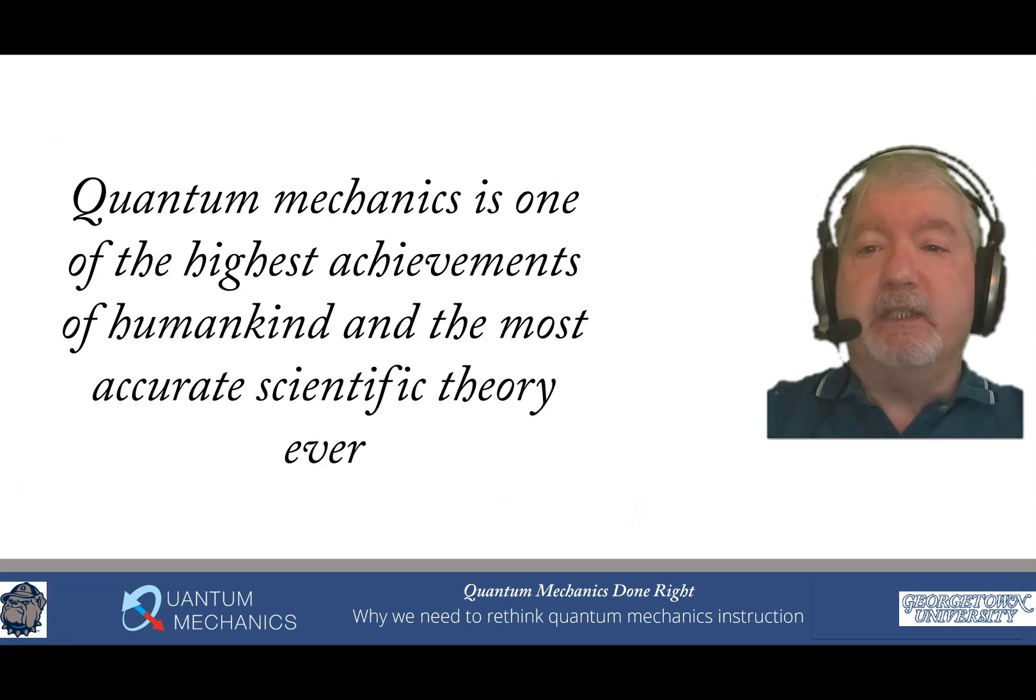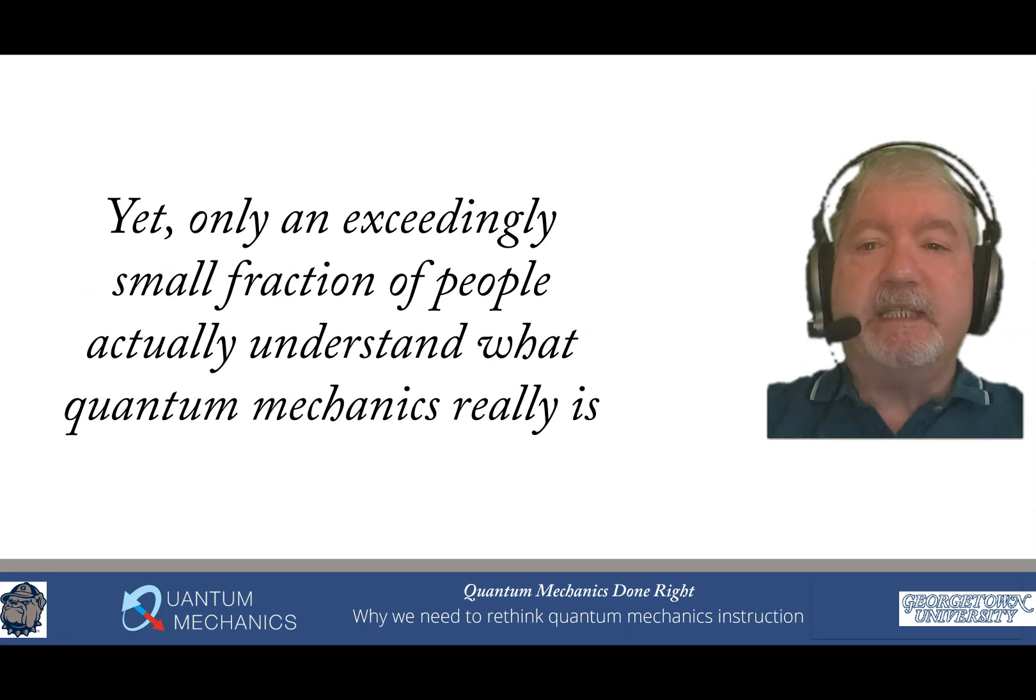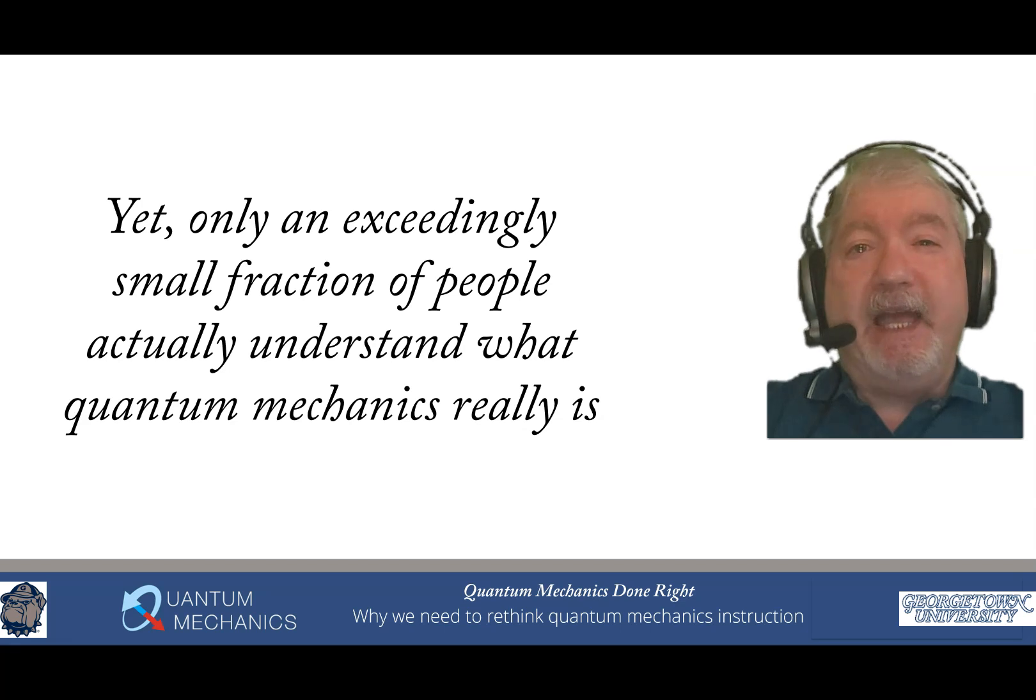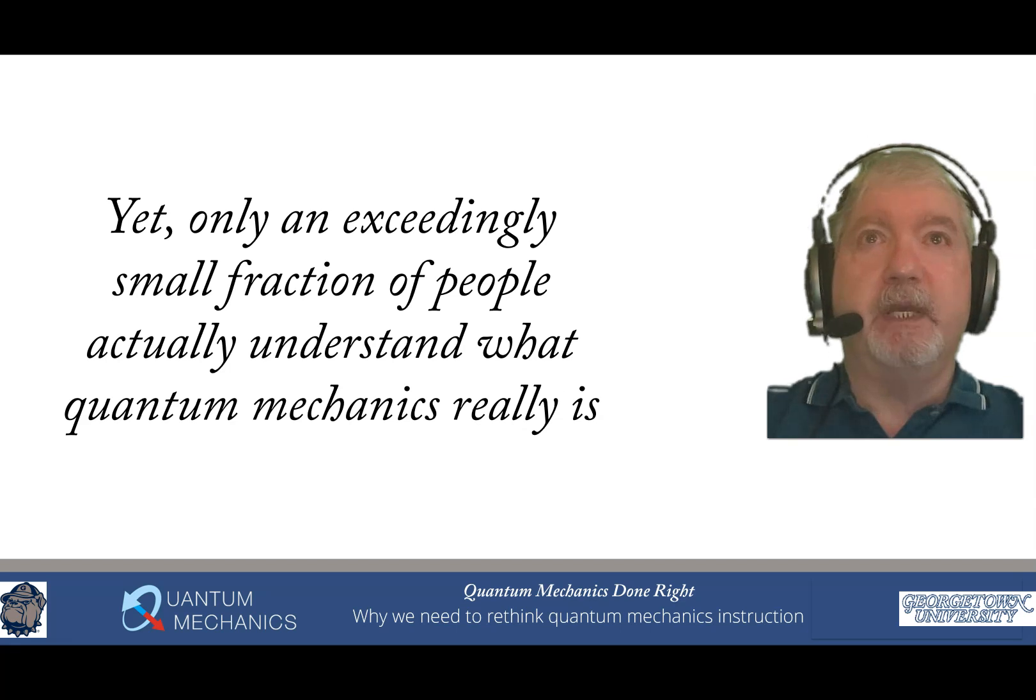Quantum mechanics is one of the highest achievements of humankind and the most accurate scientific theory ever, yet only an exceedingly small fraction of people actually understand what quantum mechanics really is. We can try this as a Fermi problem. Estimate how many people do you think actually know quantum mechanics. I would think a high estimate would be maybe about 200,000 people in the United States have taken quantum mechanics, and that would bring us into probably a 0.05 percent of the people actually understand what quantum mechanics is, less than one in a thousand. I think that's a real shame.